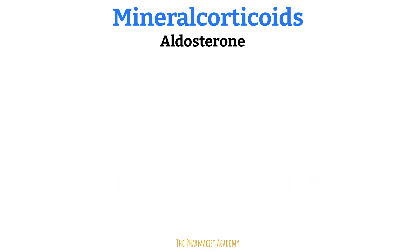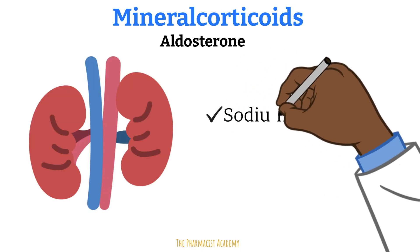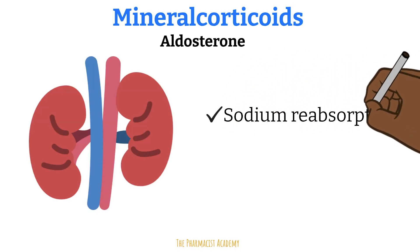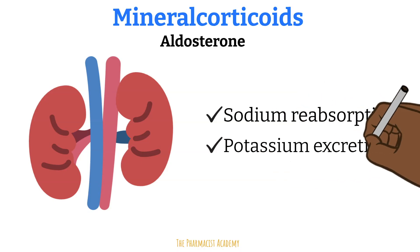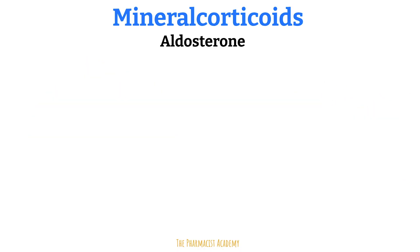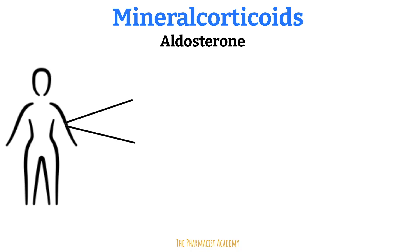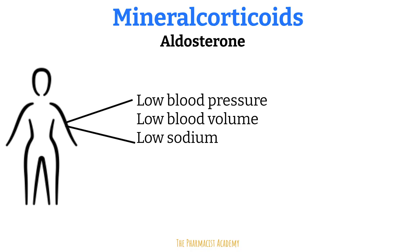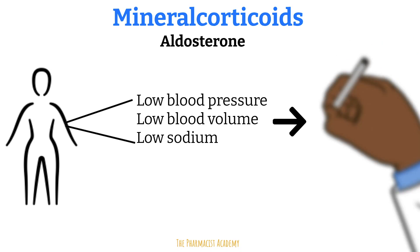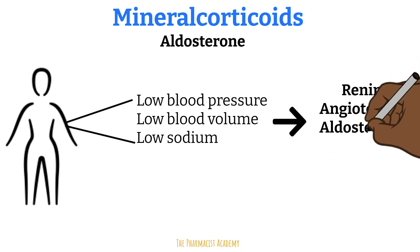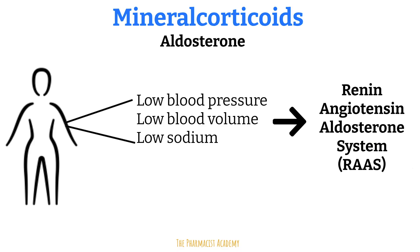The primary function of mineralocorticoids is to regulate electrolytes and water in the body. It does this by working at the kidneys, leading to sodium reabsorption back into the blood and promoting the excretion of potassium. Aldosterone is called upon when there is low blood pressure, low blood volume, and low sodium. When this happens, the body activates the renin-angiotensin-aldosterone system, or RAAS.